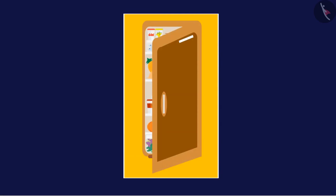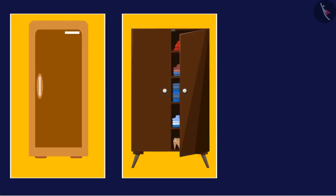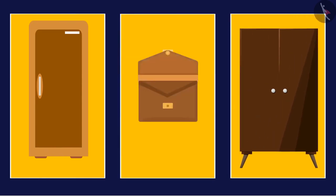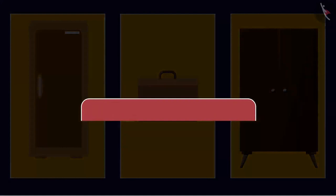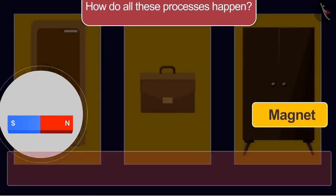Have you ever noticed the door of the refrigerator gets closed quickly when moved towards it? In the same way, the door of the cupboard also closes as soon as it reaches close to the cupboard. The button-like lock sticks to the back surface quickly. How do all these processes happen?